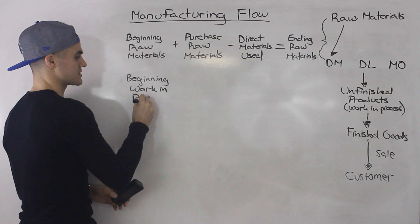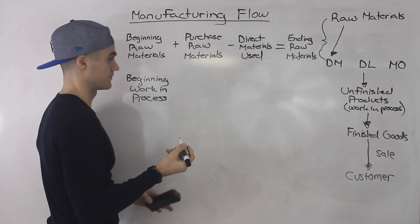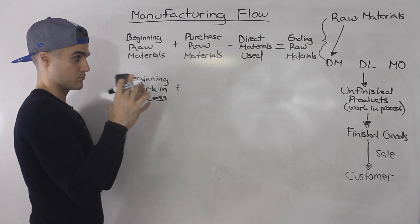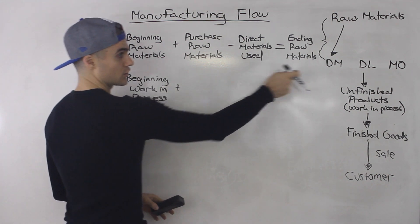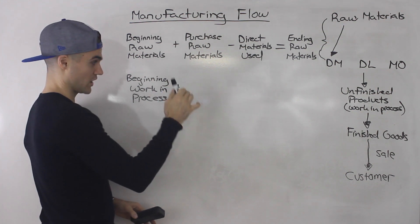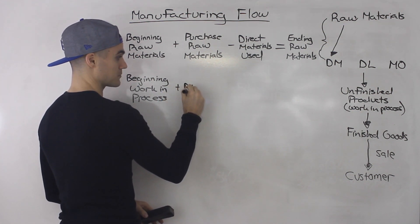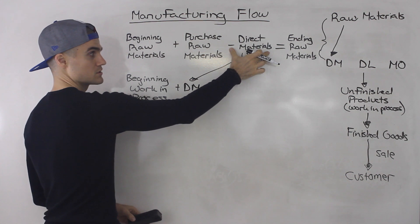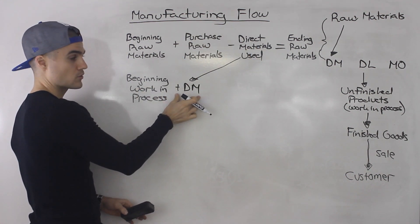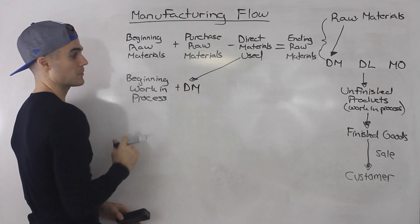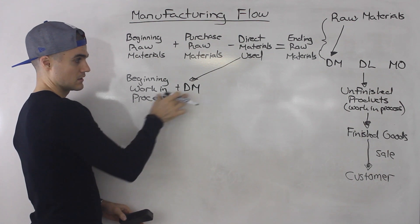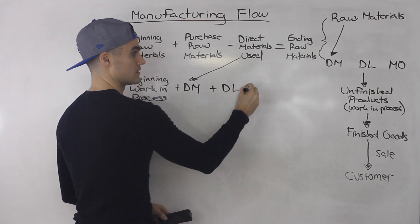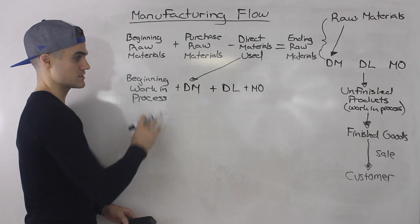On top of that beginning work in process — those products still being worked on in production — you're going to input some more production. You're going to add some more direct materials (DM), which is coming from the direct materials used that you took out of raw materials for this period. Then you add some more direct labor and some manufacturing overhead. So this is all production.